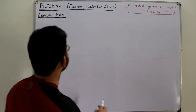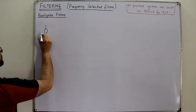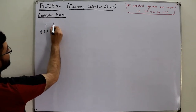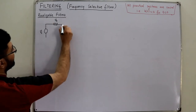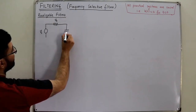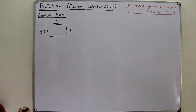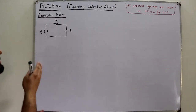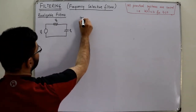We will consider a simple RC circuit. We have a source voltage VS, a resistor with voltage VR across it, and a capacitor with voltage VC across it. In this case, the output is taken from the capacitor, so output equals VC.